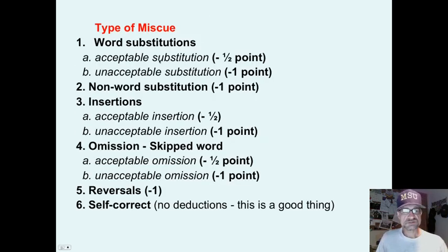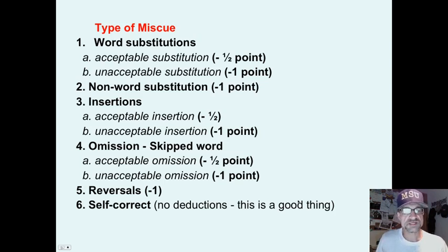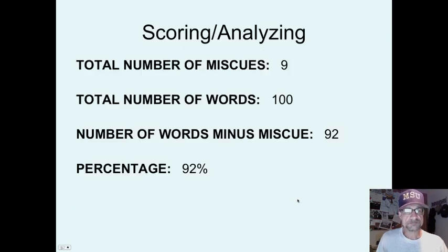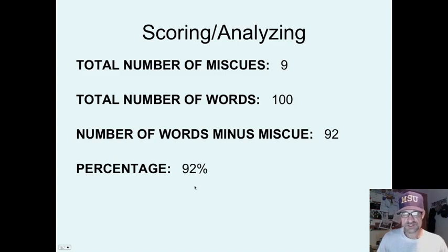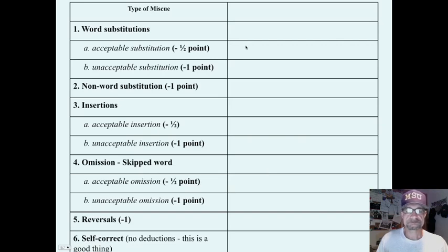Types of miscues include word substitutions, non-words, insertions, omissions, and reversals. That's the written form of what was just shown — you can stop and study this at your leisure. For scoring analysis, same as running records, you get a percentage: for example, 100 words with nine miscue total points gives you 92 out of 100, or 92%. You can put tally marks for the number of each type of miscue, just to give you a sense of how this is done.